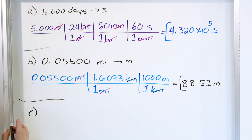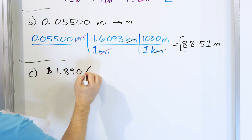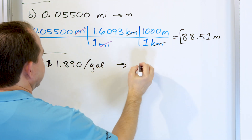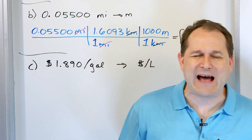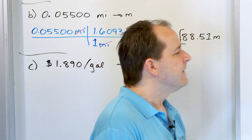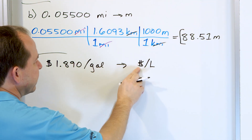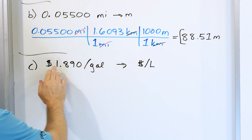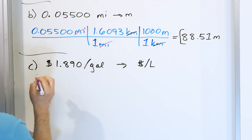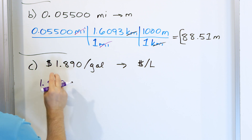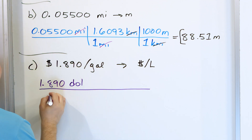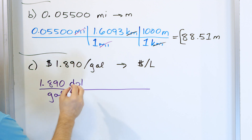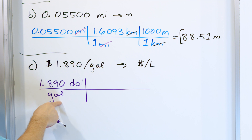Now I want you to pay attention to this one. We're going to convert 1.890 dollars per gallon into dollars per liter — this is a compound unit with dollars on top and gallons on the bottom. The dollars don't need to be converted, but the unit of volume does. You write down 1.890 dollars per gallon, with gallons on the bottom.